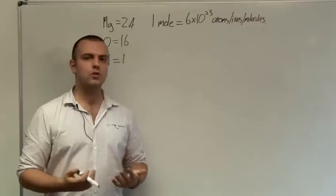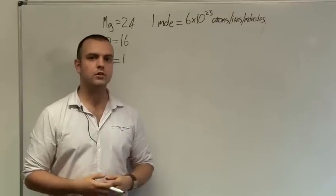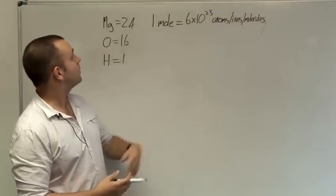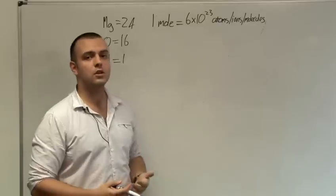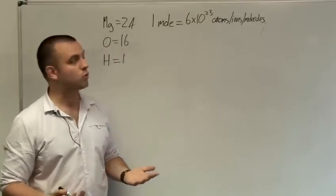This is how to do molar calculations. A mole is a unit that tells you how much of something there is. It's defined as 6 times 10 to the 23 atoms or ions or molecules or whatever is most appropriate.